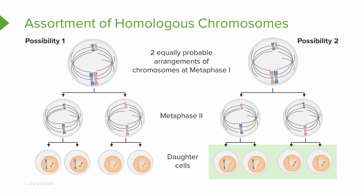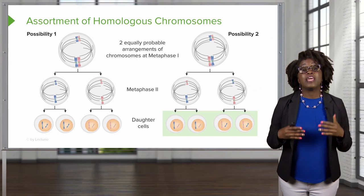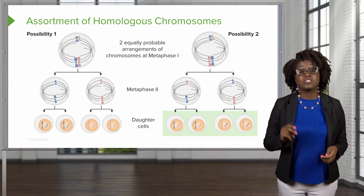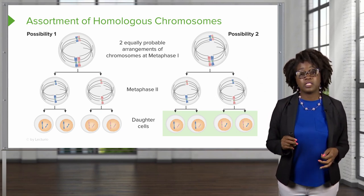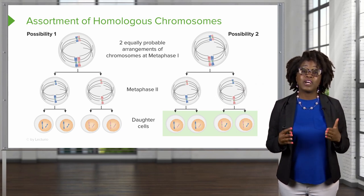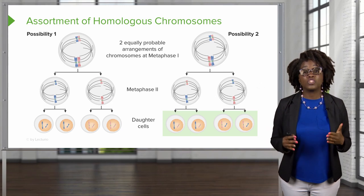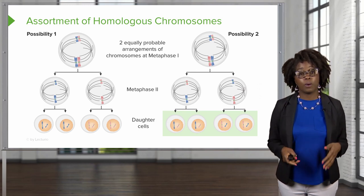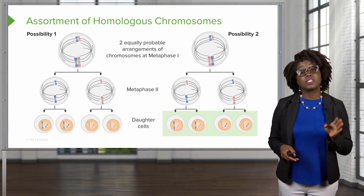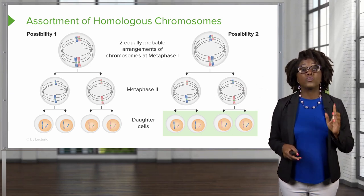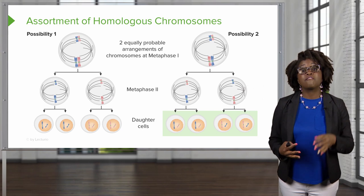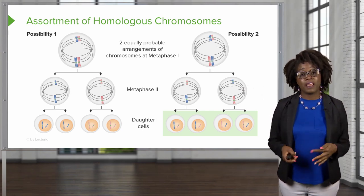With two pairs of chromosomes, there are four different possible combinations. In a human with 23 pairs of chromosomes, there are 2 raised to the 23rd power possible combinations, which equals 8,388,608 total possible combinations from our 23 pairs. When you couple this with the crossing over that happens in prophase I, each gamete offers many opportunities to pass along certain traits from the mother or father through genetic variation.